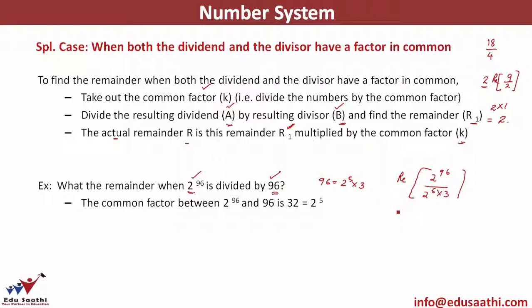Now 2^5 is common. I will not cancel it out. This is very important in remainders: you can't cancel out the common factors. You will have to take them out. I am left with 2^91 divided by 3.